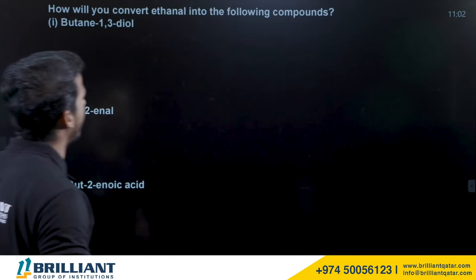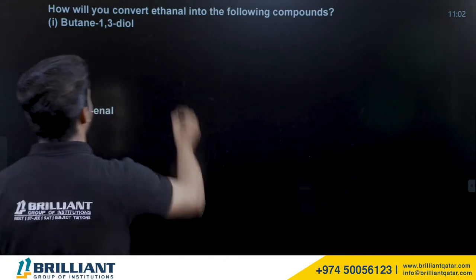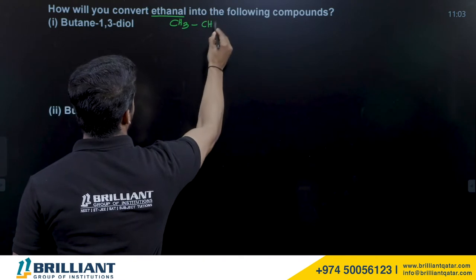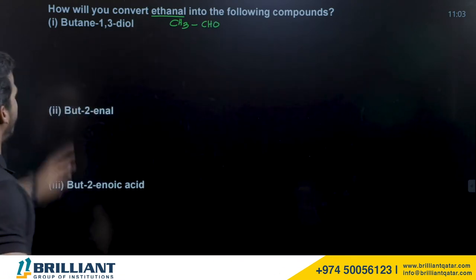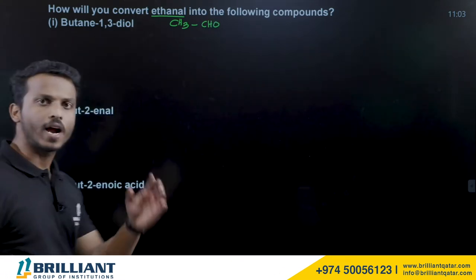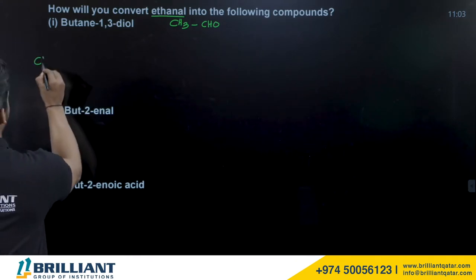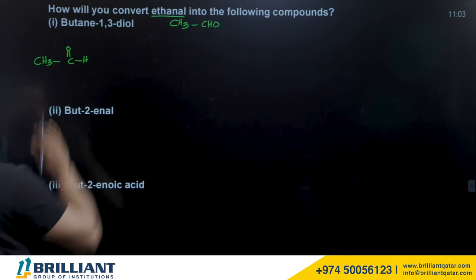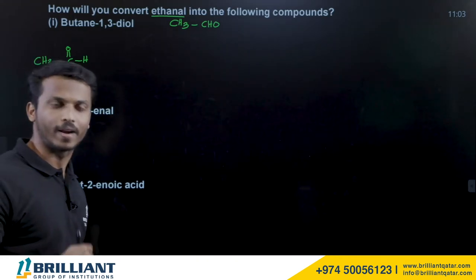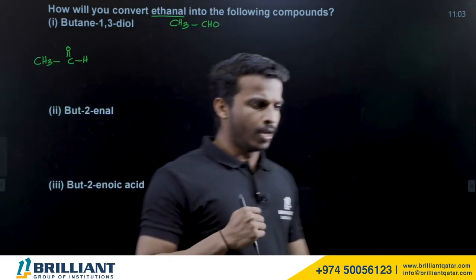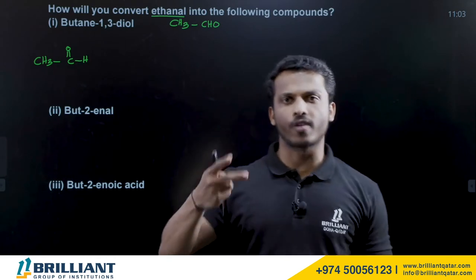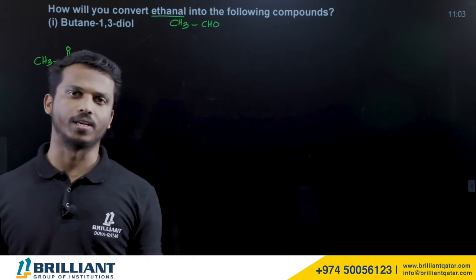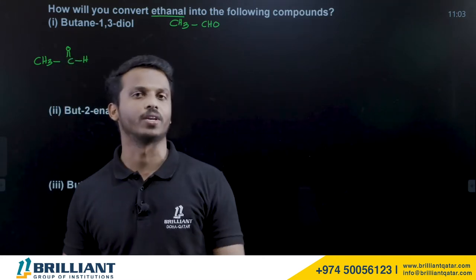How will you convert ethanol into butane-1,3-diol? Ethanol is CH3CHO. The product is butane-1,3-diol, which has 4 carbons total. If you want to double the number of carbons in an aldehyde, the technique is aldol condensation.